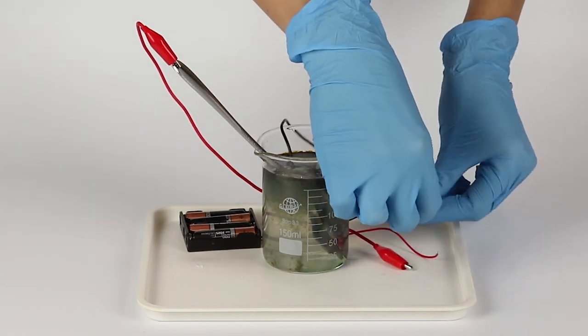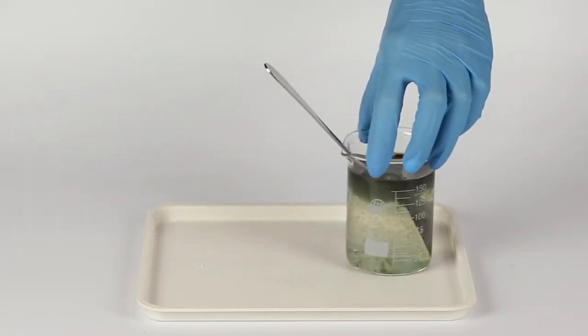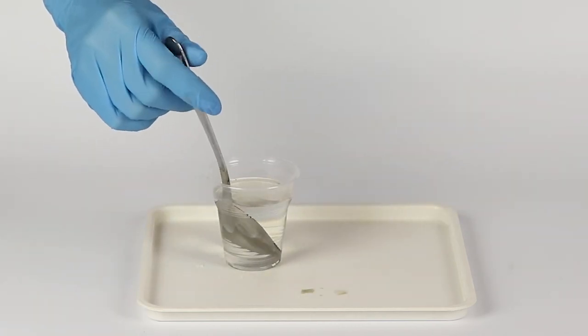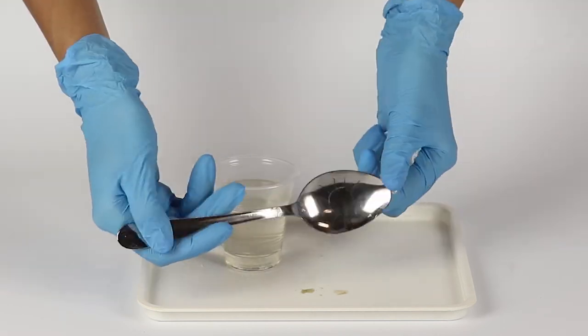Now disconnect the wires and prepare some hot water. Take the spoon out of the reaction mixture and immerse it in the hot water. Then remove the paraffin from the spoon using a napkin, and the image is revealed.